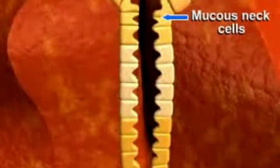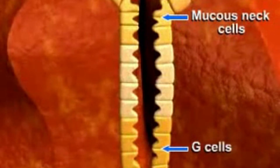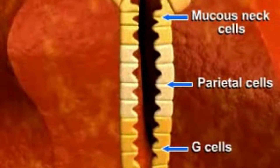The inner surface of the stomach is formed into numerous gastric pits from which acid is secreted. The cells lining the gastric pits are mucus neck cells which secrete mucus, the G cells which secrete gastrin, and the parietal cells which secrete hydrochloric acid.